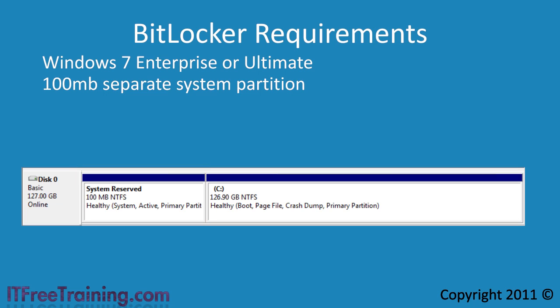If this partition does not exist, don't worry — when you configure BitLocker in Windows 7, the partition will be created automatically. Next, if you are going to use a TPM, the TPM chip needs to be version 1.2 or higher. If Windows 7 is not detecting your TPM chip, then it may need to be enabled in the BIOS.